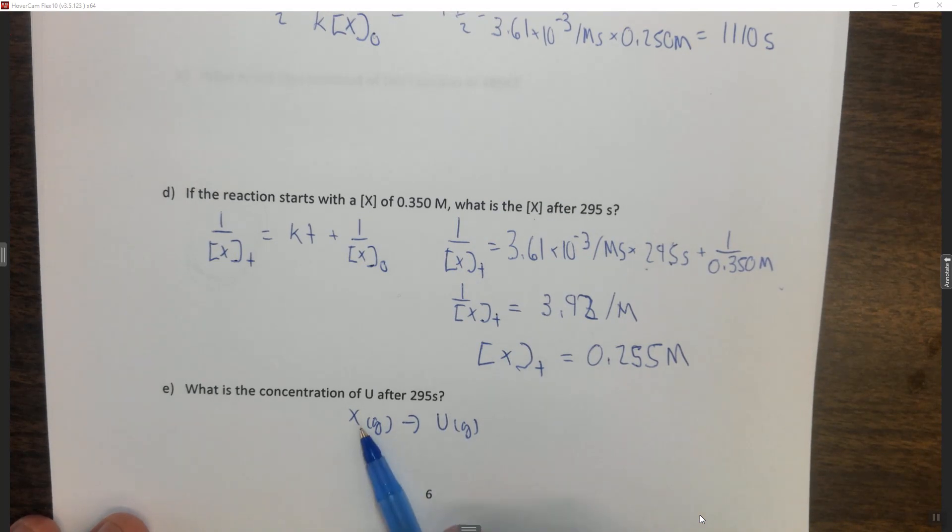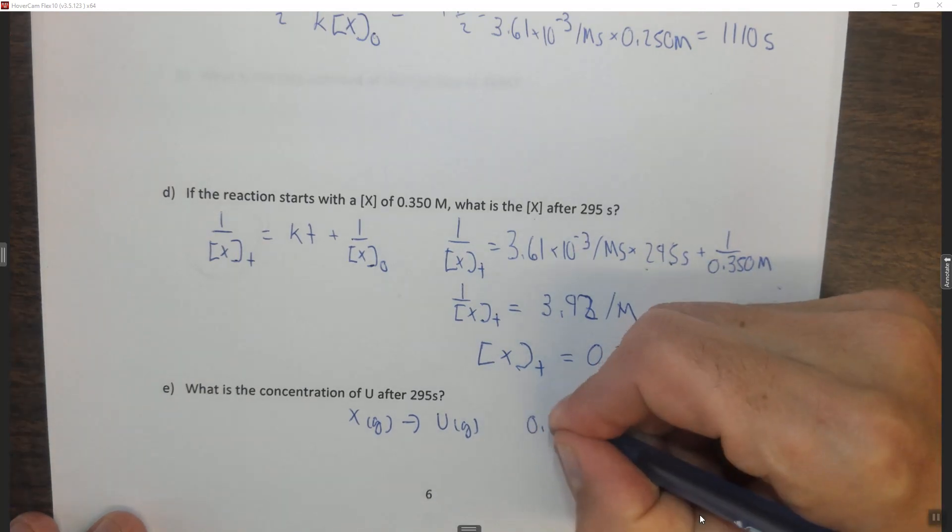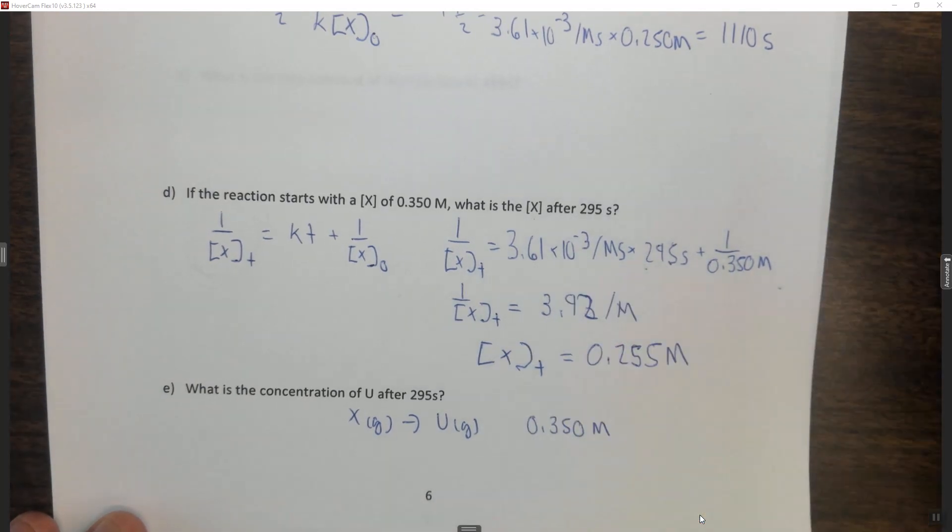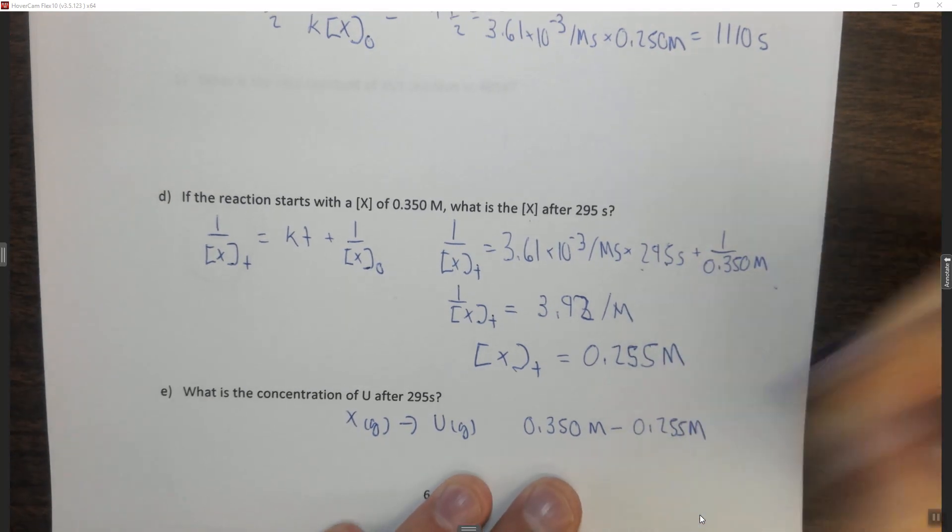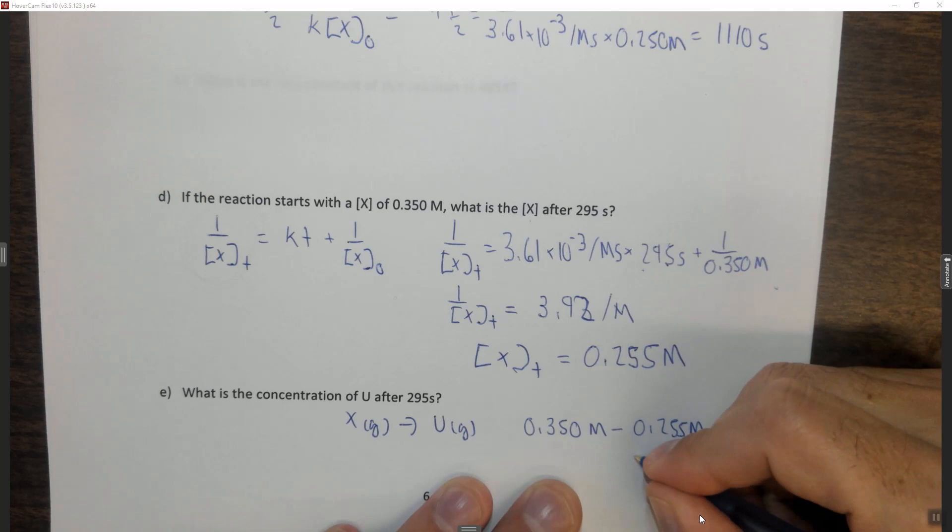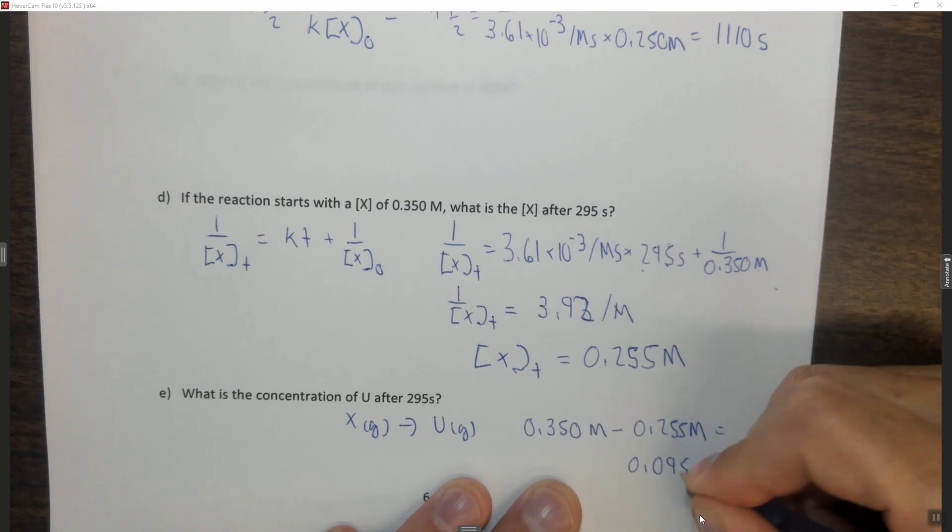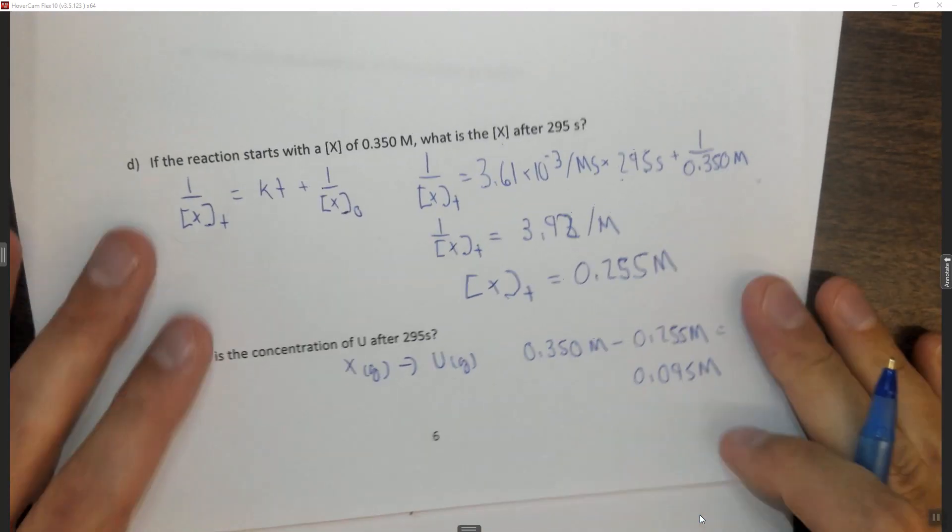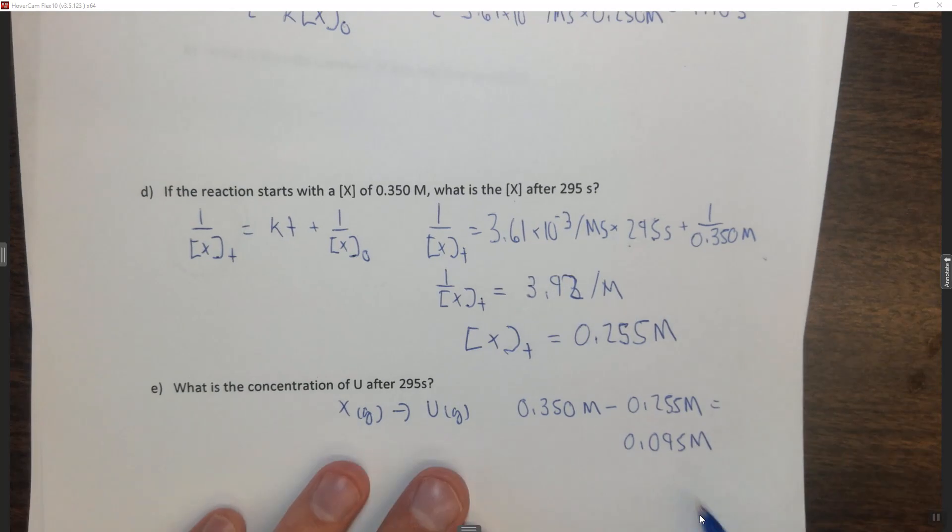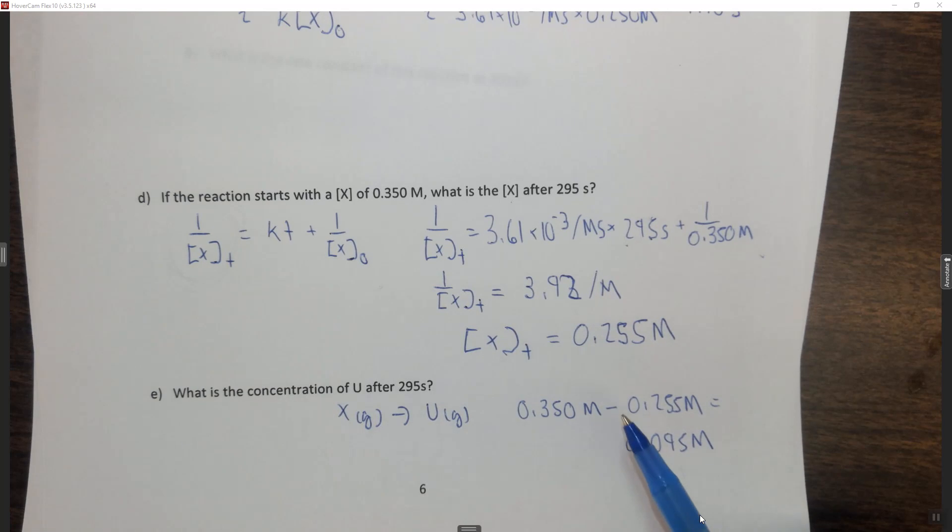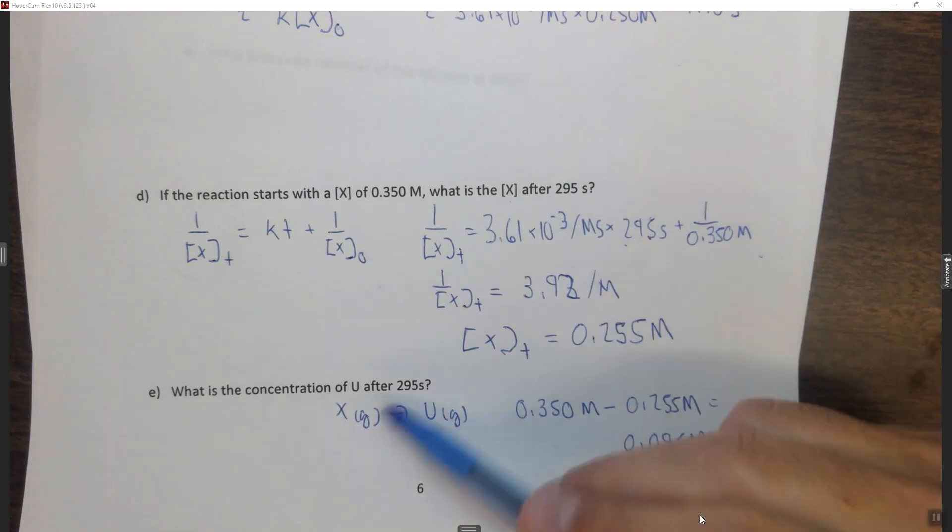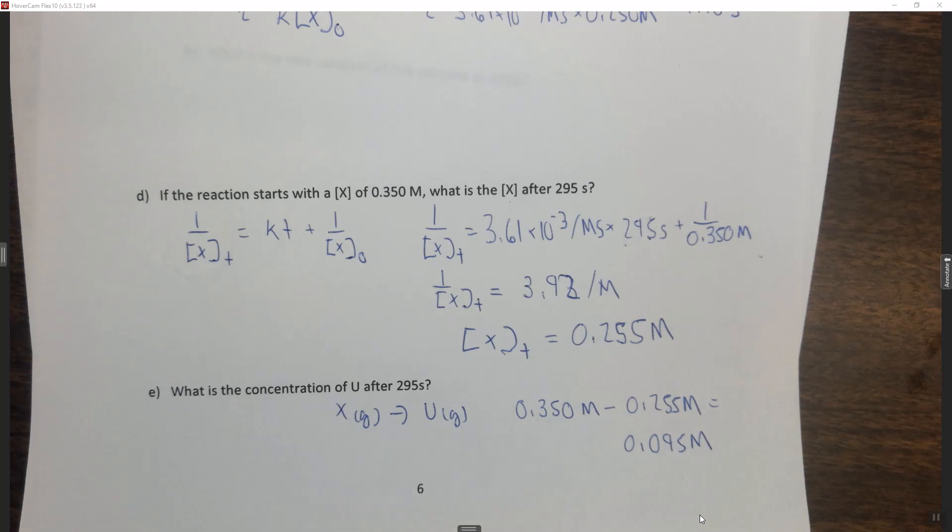Said another way, for every X we lost, we gained a U. So if we had 0.350 molar X to begin with and now we have 0.255 molar, the difference between those two things is 0.095 molar, which means that we lost 0.095 molar X and we gained 0.095 molar U. So the concentration of U after 295 seconds, the exact same amount of time, is going to be 0.095 molar.